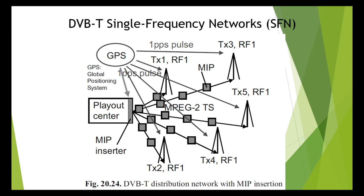The SFN adapter automatically corrects the delay from the play-out center to the transmitter site by means of a buffer store. It also requires information about the maximum delay in the network. This information can either be input manually at every transmitter site or is carried in the MIP packet, and each SFN adapter adjusts itself to this time. The MIP packet also contains a pointer.